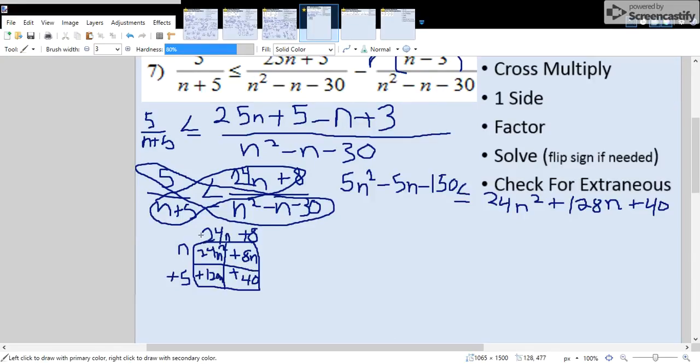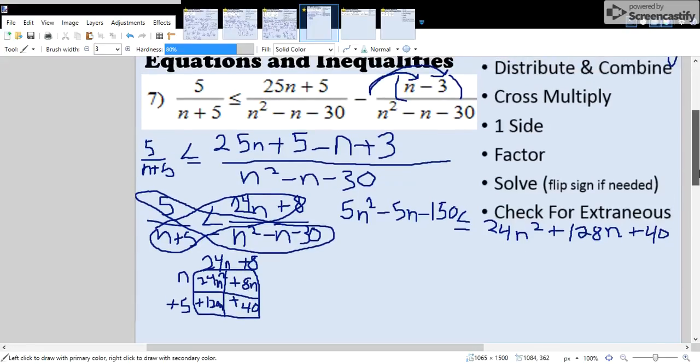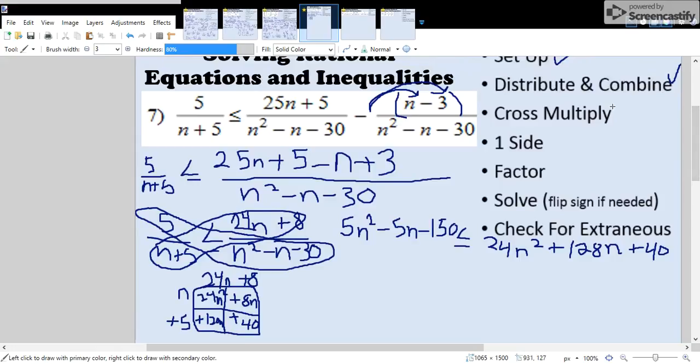After you've written up the box method for your two binomials, you get 24n squared in the first box, and then plus 8n plus 120n and then plus 40. When you combine like terms, 120n plus 8n is 128n. So now you're done with your cross multiplication.